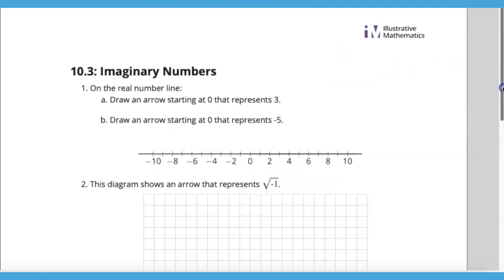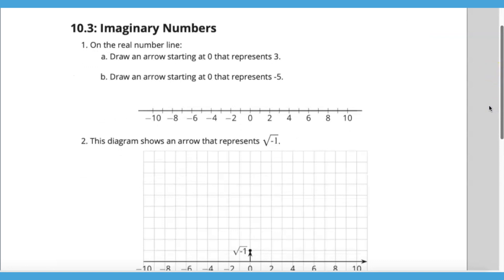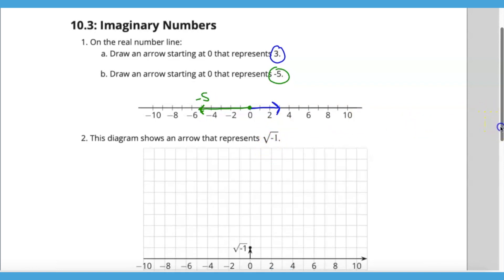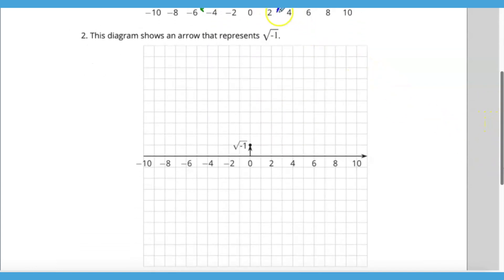I'm going to skip ahead a little bit in the lesson. They're showing how to represent numbers on a number line. If we need to start at zero and show an arrow to represent the number three, I would simply go right there. If I needed to represent the number negative five, I would start at zero and go five units to the left.